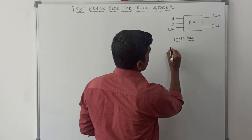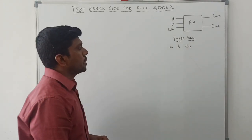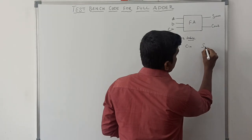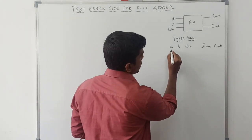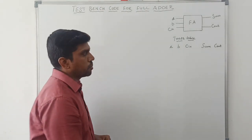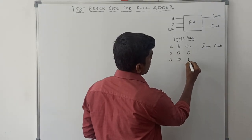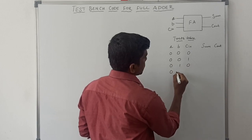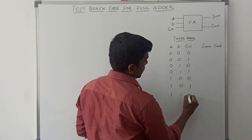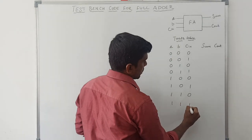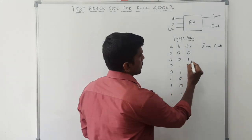The truth table for full adder: A, B, C-in are the three input variables, and sum and C-out are the two output variables. These three input variables make eight combinations of input: 000, 010, 100, 001, 110, 101, 010, 110, and 111. By adding these three variables you can get the sum and carry out.